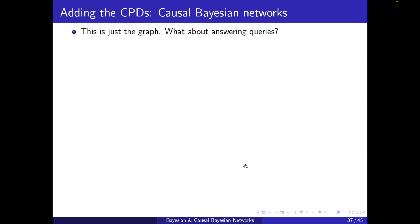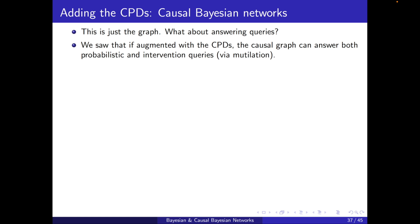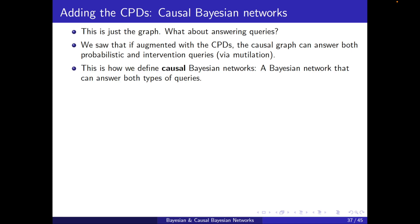But this is just the graph. What about answering queries? We saw that if augmented with the CPDs, the causal graph can answer both probabilistic and intervention queries, where the intervention queries were answered by mutilation. This motivates us to define a notion with CPDs independent of SCMs. And this is exactly how we define causal Bayesian networks — a Bayesian network that can answer both types of queries.